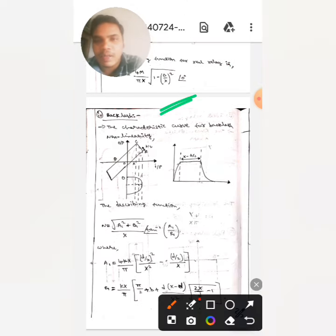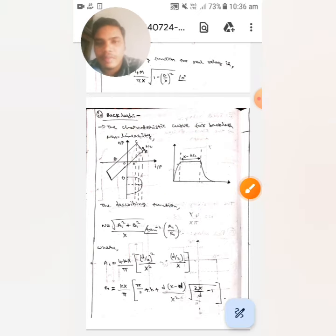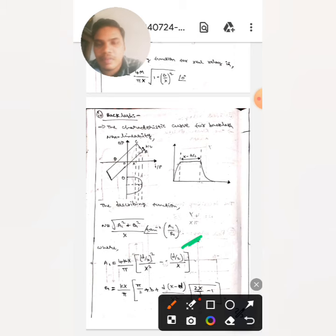The next one is backlash. Here the characteristic curve for backlash non-linearity is this whole figure. The describing function is n equals to root over a1 square plus b1 square divided by x into tan inverse of a1 by b1. Here a1 is 4kx into d by 2 whole square by x square.